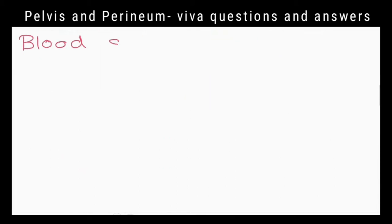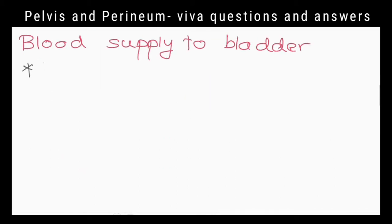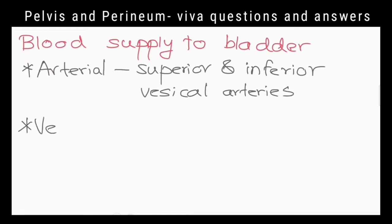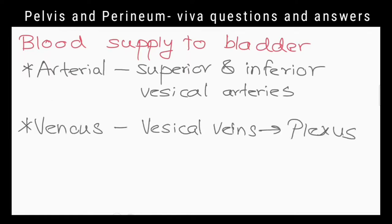What is the blood supply of the bladder? Arterial supply is from the superior and inferior vesical branches of the internal iliac artery. Vesical veins form a plexus which drains into the internal iliac vein.